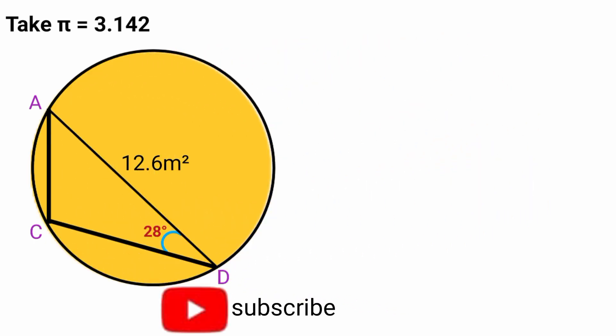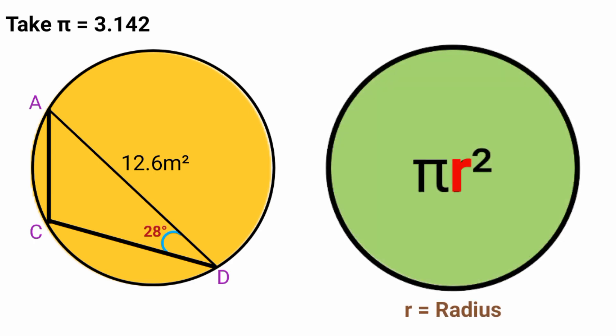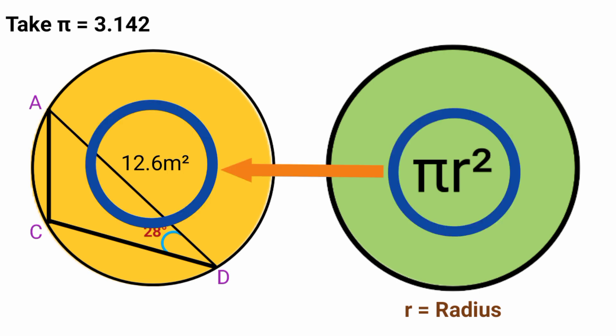Now since they said the area of the circle is 12.6 meters squared, what information does this convey? Recall the general formula for the area of the circle is πr² where r is the radius. So we can equate πr² to 12.6.